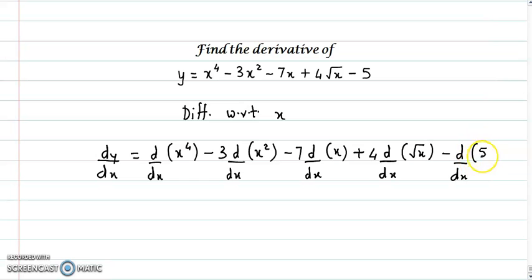The derivative of x⁴ is 4x³, minus 3 times the derivative of x² which is 2x, minus 7 times the derivative of x which is 1, plus 4 times the derivative of √x which is 1/(2√x), and the derivative of the constant 5 is 0.